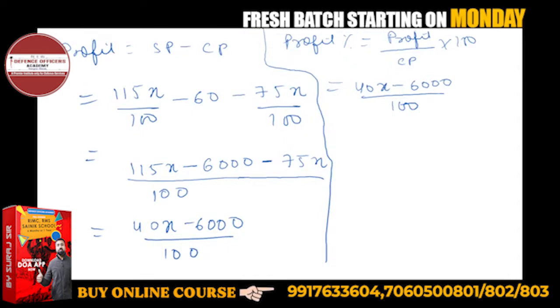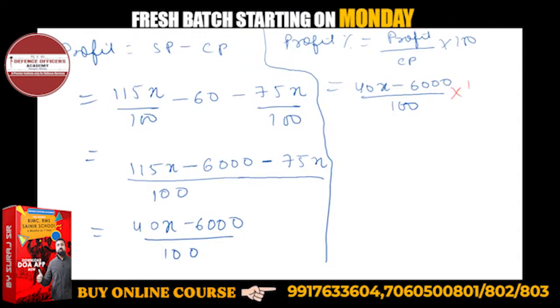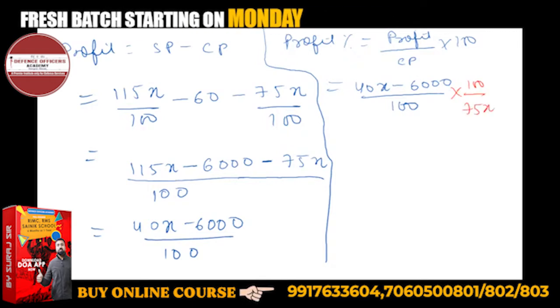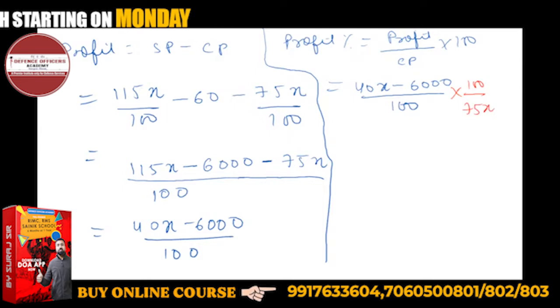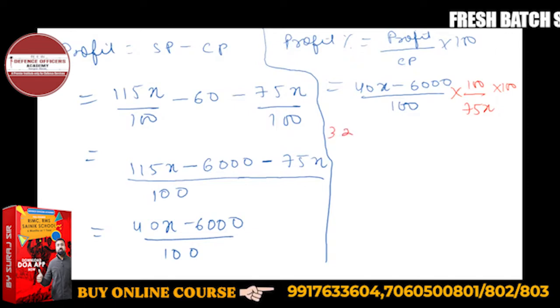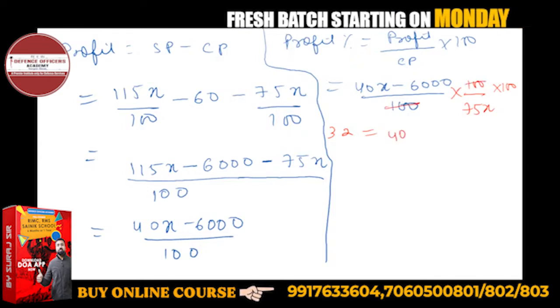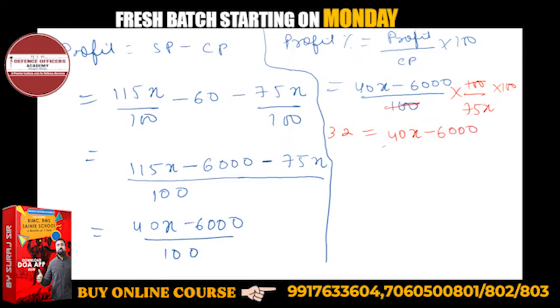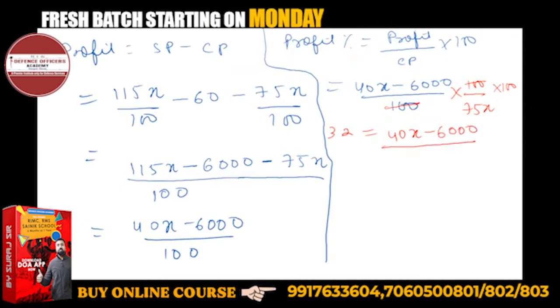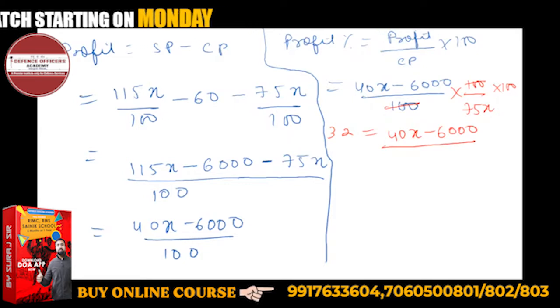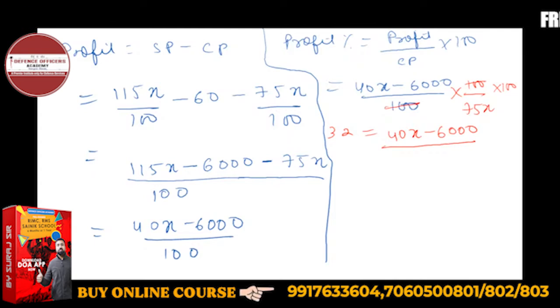So upon 75x upon 100. This will go back up, into 100 by 75x, and into 100. That profit percent is 32. Let's solve it. I'll bring this 100 here.